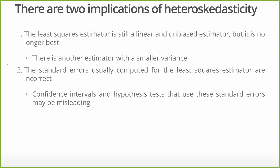There are two important implications of having heteroscedasticity. The first one is the least squares estimator is still a linear and unbiased estimator, but it is no longer best. The estimators, the coefficients, aren't wrong. But they're not best. There is another estimator out there that's going to give you a smaller variance or smaller standard error on each one of those coefficients.